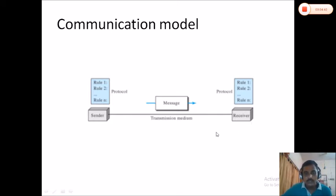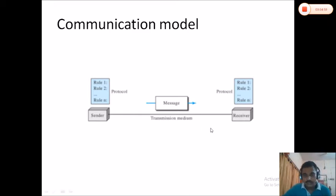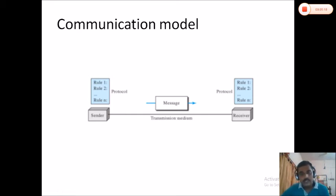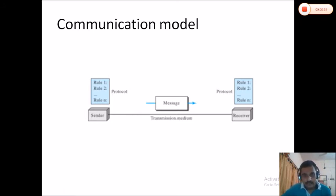So that the communication becomes a successful one, the communicating devices must obey the protocols. The sender is a device that can transmit data — it can be a laptop, desktop, or mobile phone. The receiver is a device to which the data is sent. The message is the actual data transmitted, which can be in the form of text, image, audio, or video. The transmission medium is the physical path between sender and receiver; it can be either wired or wireless. The set of rules that must be obeyed by the devices participating in communication is called protocols.